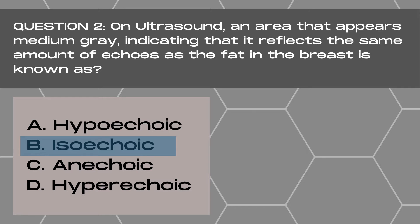It indicates that the mass or type of tissue is reflecting the same amount of echoes back to the transducer as the fat in the breast is. And we call this isoechoic.